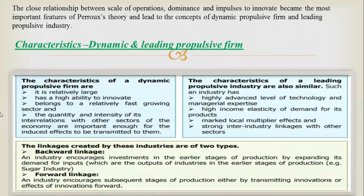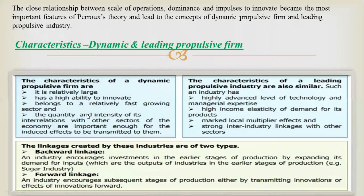We must understand the difference between a firm and an industry. A firm refers to a single production unit whose main objective is to earn profit. An industry means a group of firms producing the same product. For example, Tata Motors is a firm under the automobile industry. There are certain characteristics of both firm and industry which are required for a growth pole to develop, and certain linkages are also required.